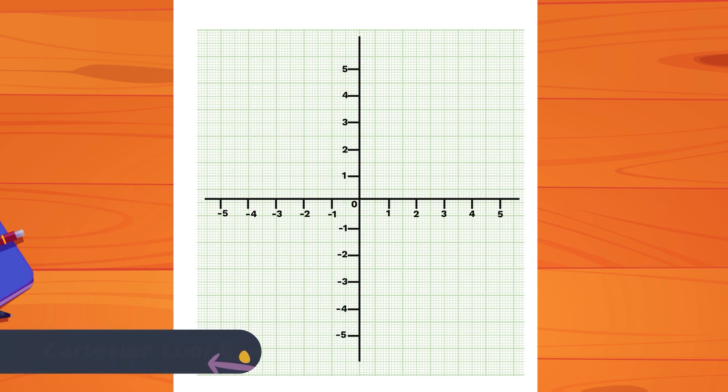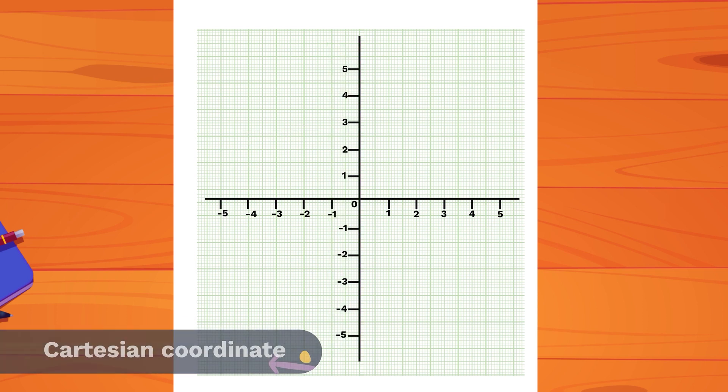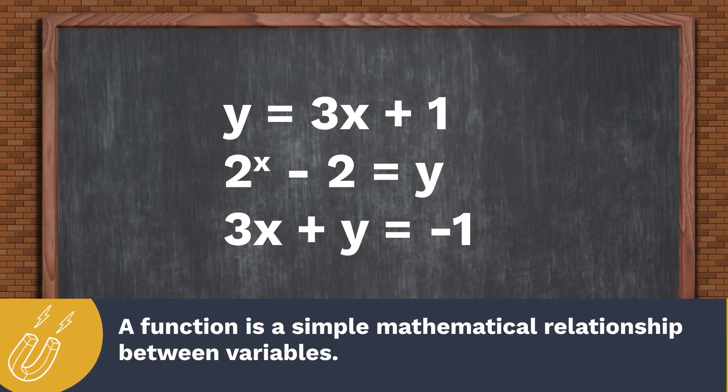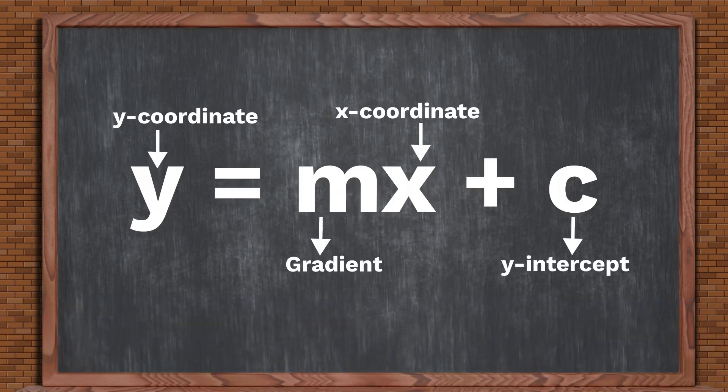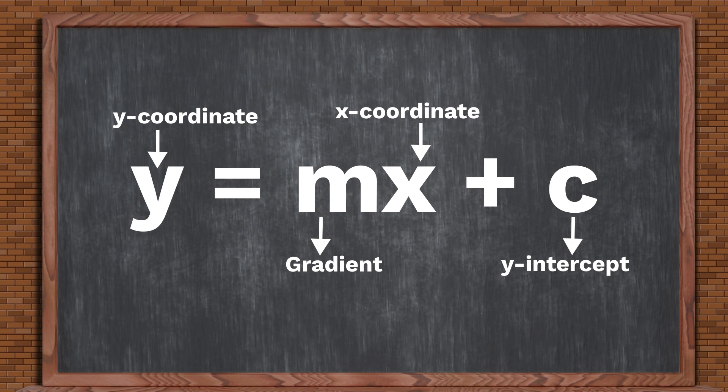The Cartesian coordinate is used to represent functions. A function is a simple mathematical relationship between variables. A function is said to be linear whenever the power of the independent variable is 1 or 0.